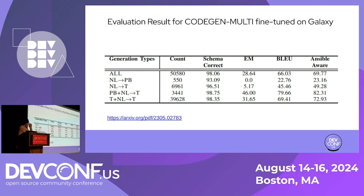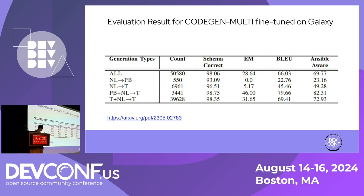This is a result from CodeGen fine-tuned on Galaxy from the referenced paper. As you can see, the exact match score is very low. This paper works on natural language to Ansible playbooks or tasks, using CodeGen as the base model fine-tuned on Galaxy. Comparably, our model definitely outperforms the one reported in that paper. This is the final evaluation metrics comparison.